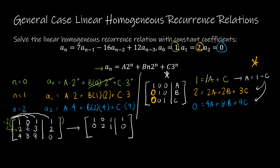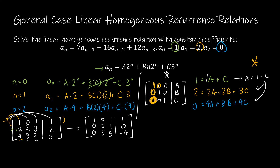Similarly, I take row 1 times −4 and add to row 3 to eliminate the leading 4: −4×1+4 = 0, −4×0+8 = 8, −4×1+9 = 5, −4×1+0 = −4. New row 3 is [0, 8, 5 | −4]. Now I have zeros where I want them in the first column, and I have the 0 in row 3's first position as well.